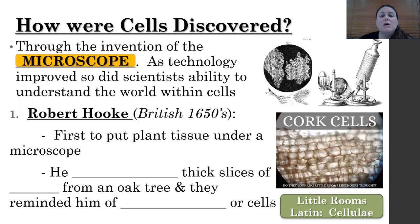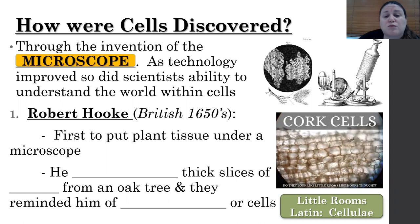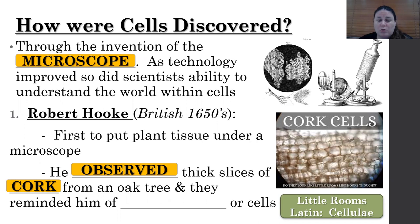The invention of the microscope was really important. And as the technology improved, so did scientists' ability to understand the world within cells and what those cells were doing. And one of the first people to do that was Robert Hooke. He was the first to examine plant tissue under a microscope. What he put under the microscope was slices of cork from an oak tree. The cork layer is kind of right underneath the bark layer, and it's a dead layer of cells.